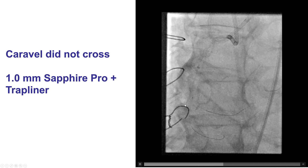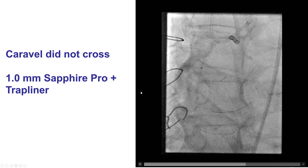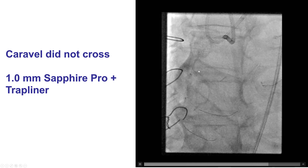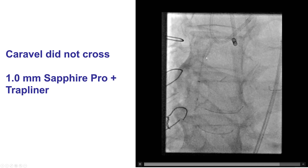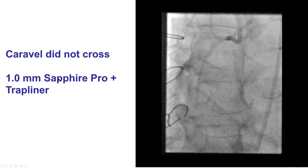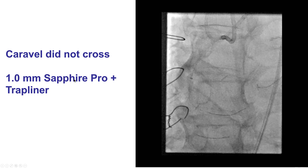We were trying to advance the Caraval farther down but were unable to do so. That was an uncrossable lesion for the microcatheter, so we used extra support using a Trapliner guide extension along with a 1.0 mm Sapphire probaloon.